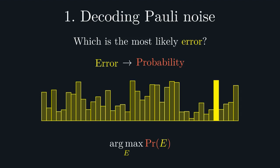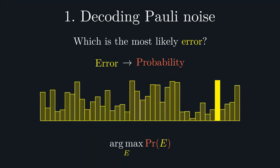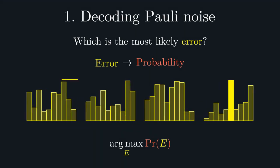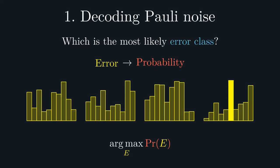To account for this, we need to group degenerate errors into so-called error classes. We can now see that we should refine our question into not what is the most likely single error, but what is the most likely error class. To do this, we need to find the induced distribution over these error classes, and once again take the maximum.